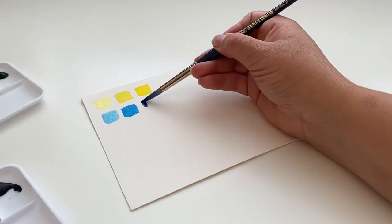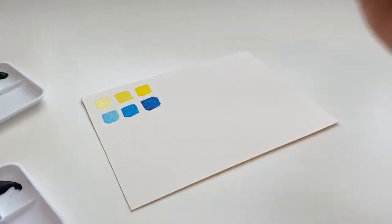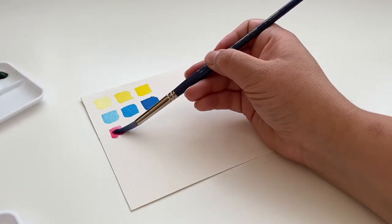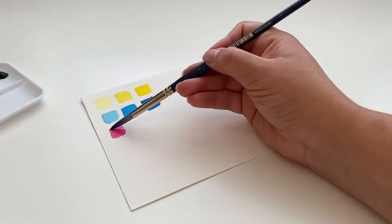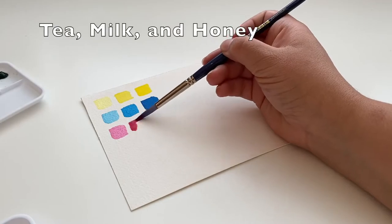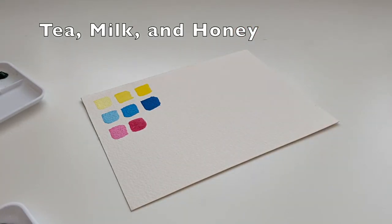The darkest and most opaque application will be something that is referred to as honey. I'm not necessarily achieving that here in this sample, but as you get darker and the paint gets thicker and tackier, that's moving closer towards that honey-like consistency. Tea, milk, and honey are terms you'll hear me using in the workshops.